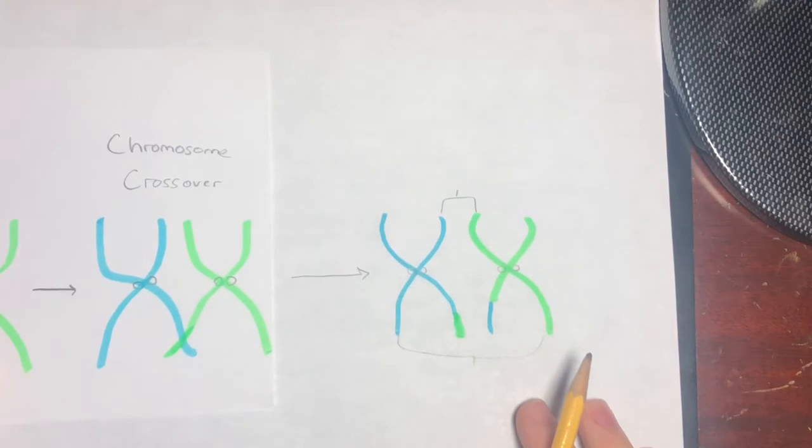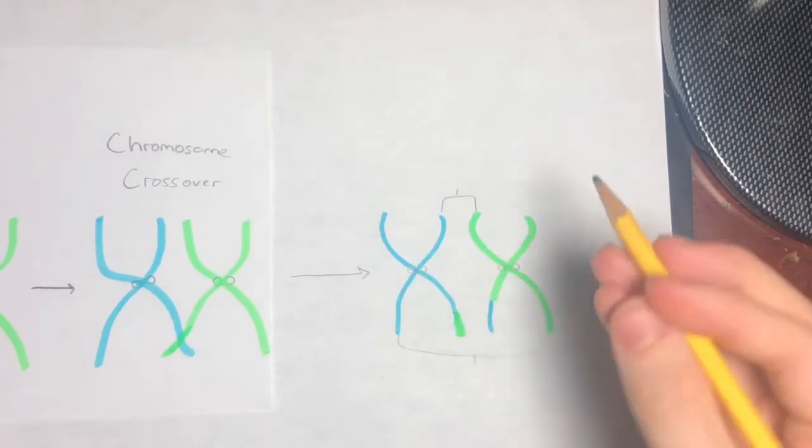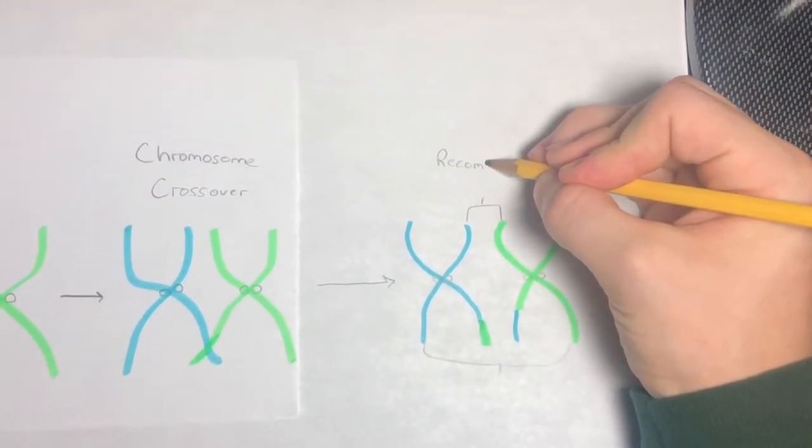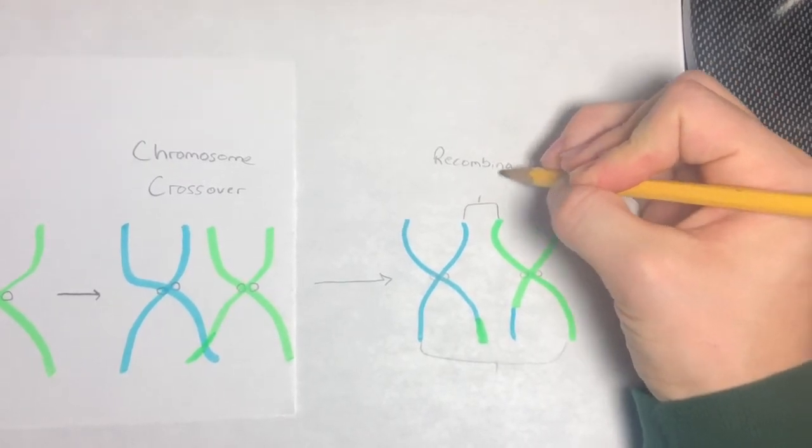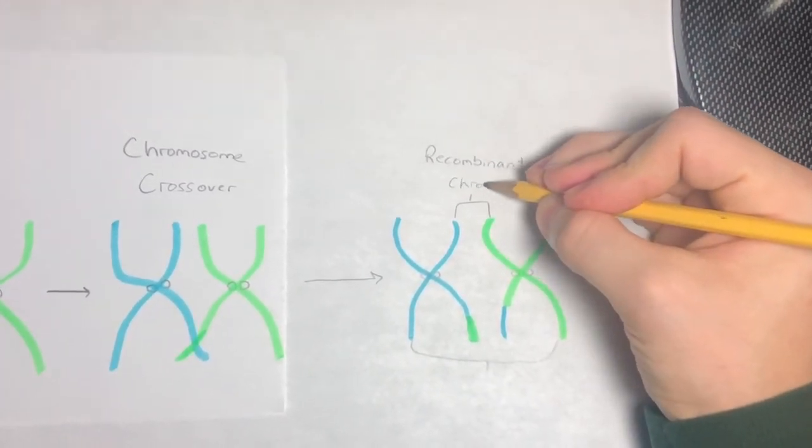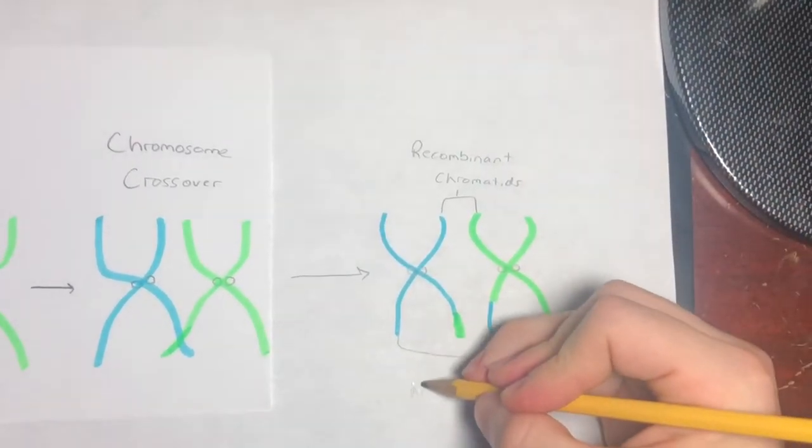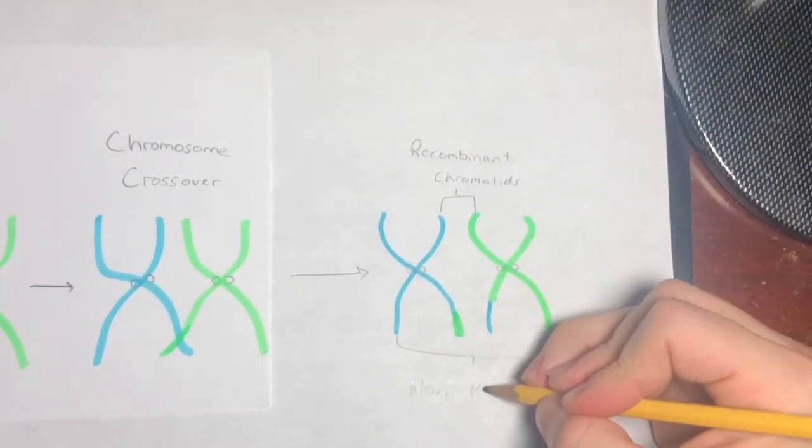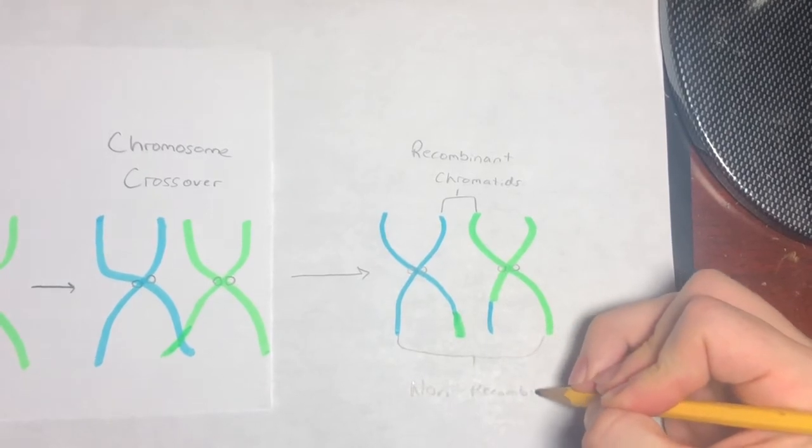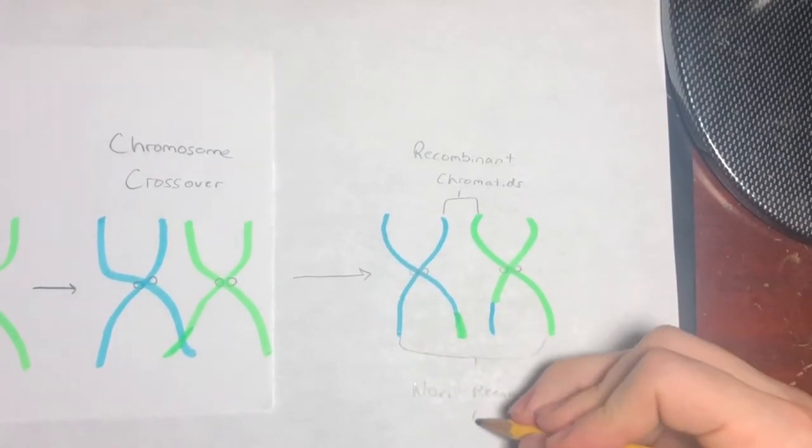The result looks like this, where we have recombinant chromatids here, and non-recombinant chromatids here.